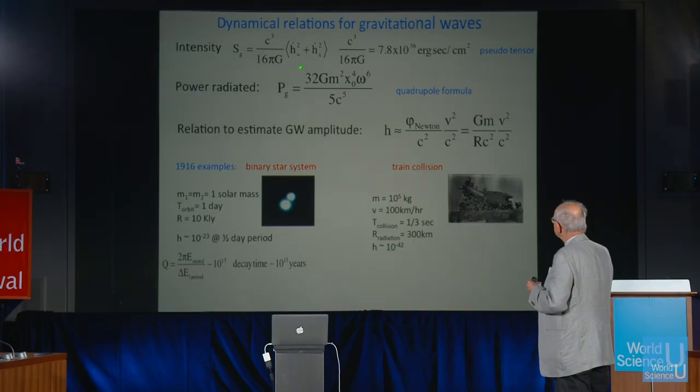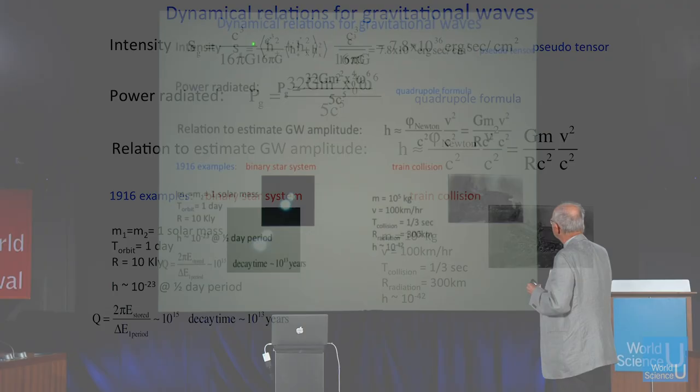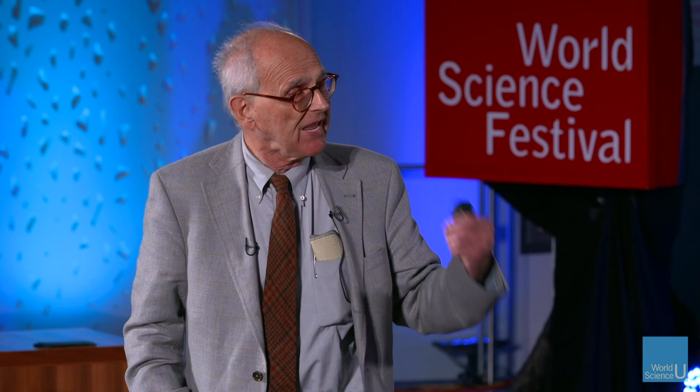I prefer to turn this around and look at how much energy you have to put out there to make a little bit of strain. What you find out is that it takes a tremendous amount of energy to distort space a little bit. That's the thing that makes it so hard to detect these waves, and also very hard to make the waves. This formula — which he got wrong in the 1916 paper — is called the quadrupole formula. It relates the amount of power radiated to the parameters of the source.